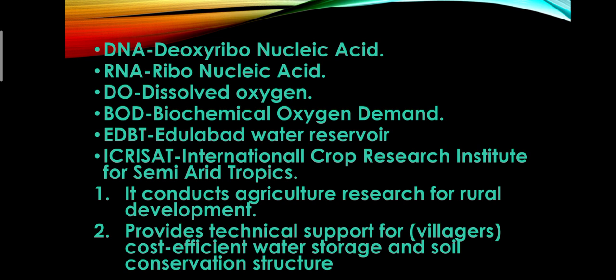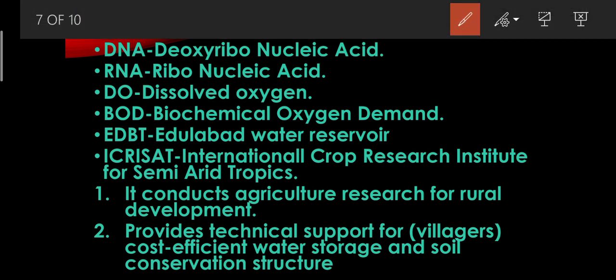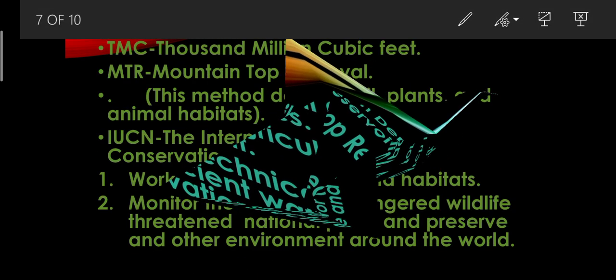Next, EDBT — Edulabag Water Reservoir. In your textbook, there is a case study of how water gets polluted, given in the form of the Edulabag Water Reservoir. Next, ICRISAT — this is a very important abbreviation and a two-mark question can be expected from it. ICRISAT full form is International Crop Research Institute for the Semi-Arid Tropics. It conducts agriculture research for rural development and provides technical support for villages, including cost-efficient water storage and conservation structures.